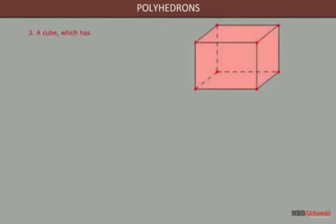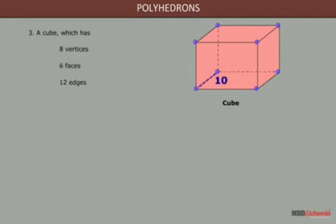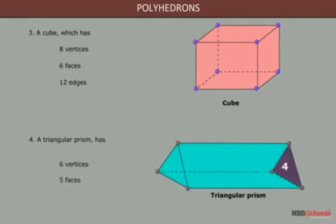A cube which has eight vertices, six faces, and twelve edges. A triangular prism has six vertices, five faces, and nine edges.